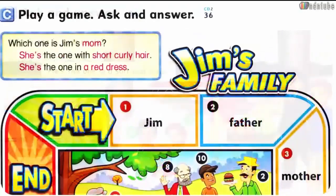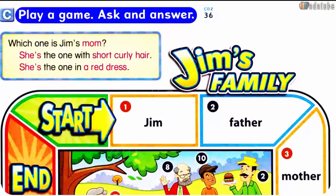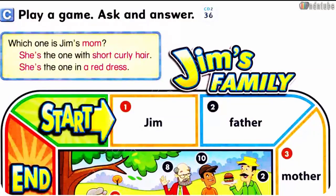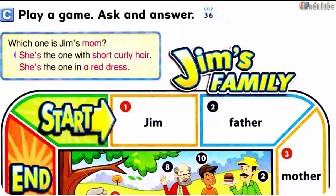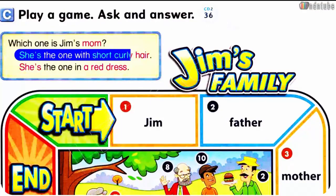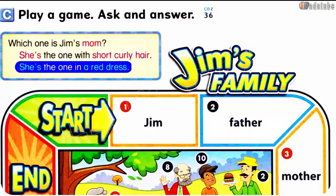Page 53. See. Play a game: Ask and answer. Which one is Jim's mom? She's the one with short curly hair. She's the one in a red dress.